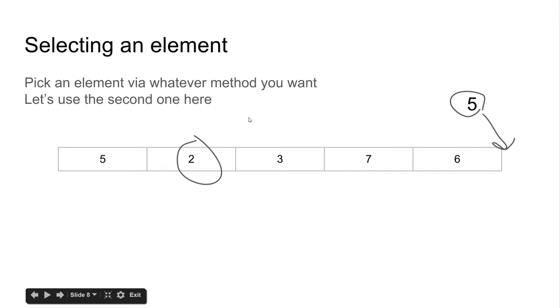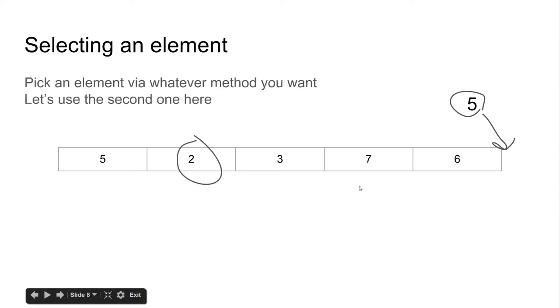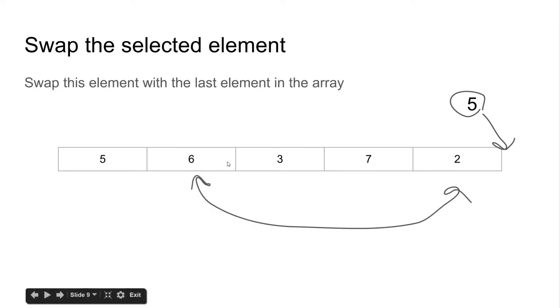And then we pick our element via whatever method we want, randomly, or whatever sort of picking method that you have. And let's say this two is our target. This is the one that we want to get rid of. And what we do is we actually swap the two with the element that was at the end of the list. So, if we go back to our previous slide, we see the six is at the end, and the two is in the second slot here, or the index one, if you want to think about it that way. And we swap these two, we swap those two elements, and that shouldn't be too difficult for us to do.